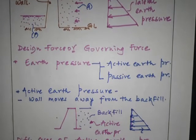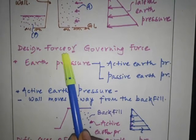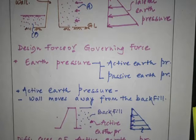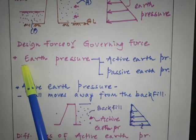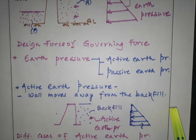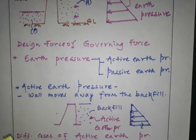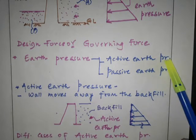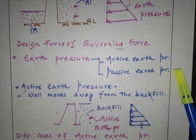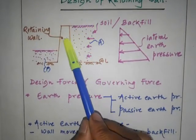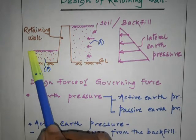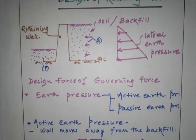After that, I discussed the design forces, or the governing forces we need to consider for the design of retaining wall. The wall will be designed to resist the earth pressure, that is lateral earth pressure. In that, we have two types: active earth pressure and passive earth pressure. The wall retains the soil, which creates active earth pressure, and on the other side, the soil develops passive earth pressure.